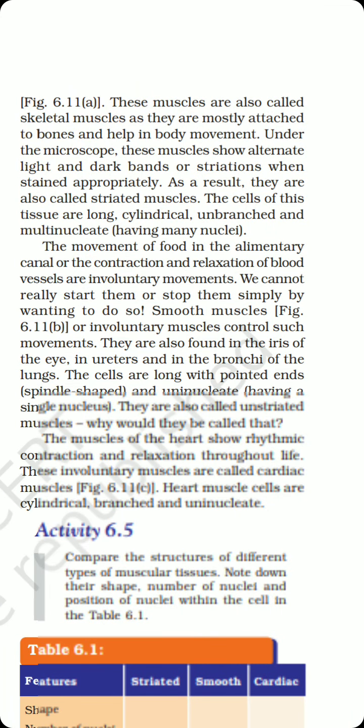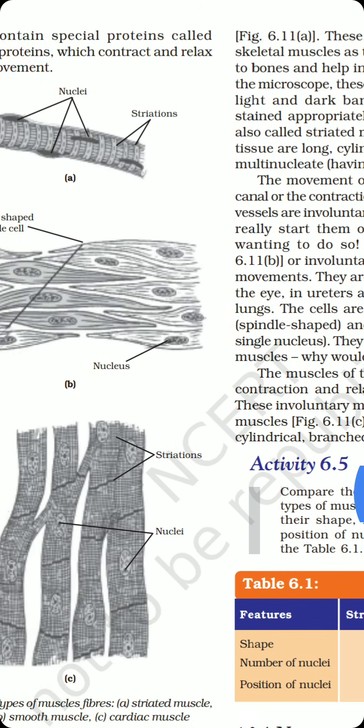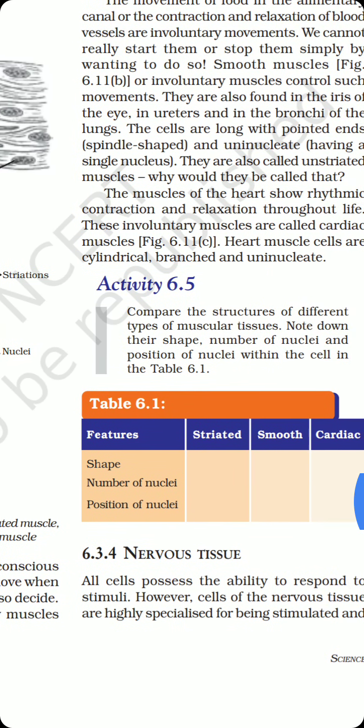The last kind of muscles we have to study is the muscles of the heart, also known as cardiac muscles. They show rhythmic contraction and relaxation throughout life — from before birth until death. The heart develops within an organism at about one to one and a half months of fetal development, and from that time the heart beats continuously without getting any kind of fatigue. These special muscles are involuntary, cylindrical, branched, and uninucleate.